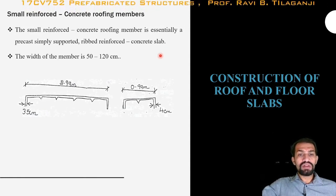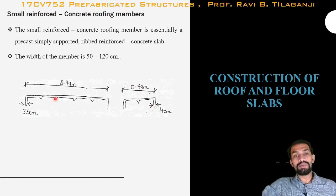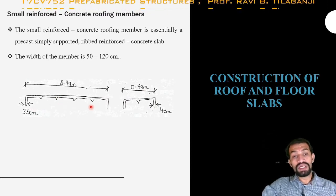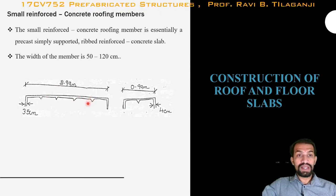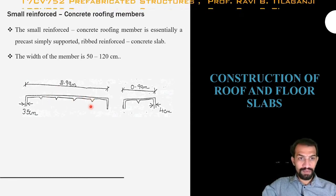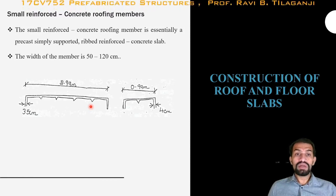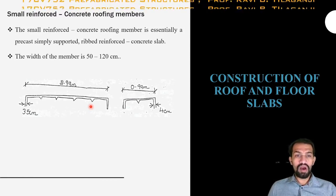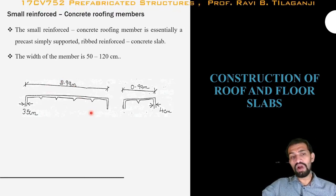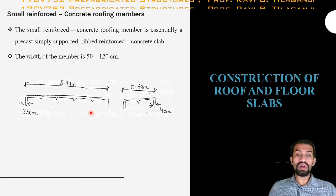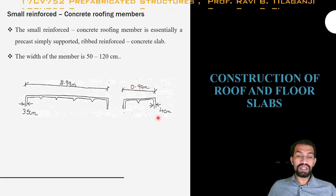Small reinforced concrete roofing members are another type, approximately 3 meters by 1 meter in plan with a thickness of about 4 centimeters, and may have a ribbed or grooved profile up to 35 centimeters in depth. These act as girder-type members for load transfer and support. A small reinforced concrete roofing member is essentially a precast simply supported ribbed reinforced concrete slab with a width of about 50 to 120 centimeters, up to a maximum of 3 meters.